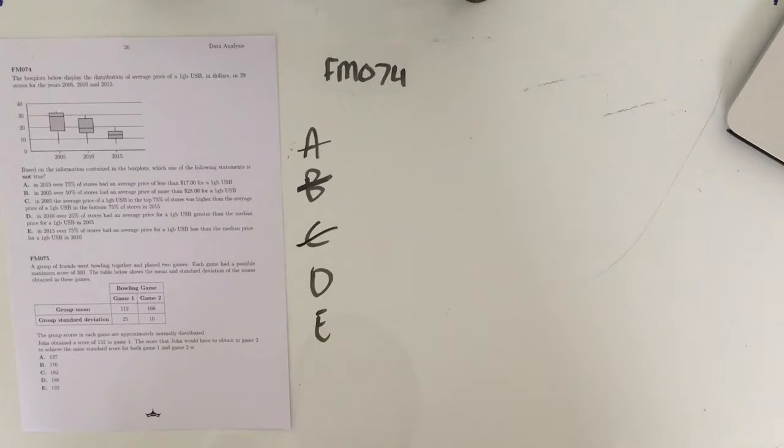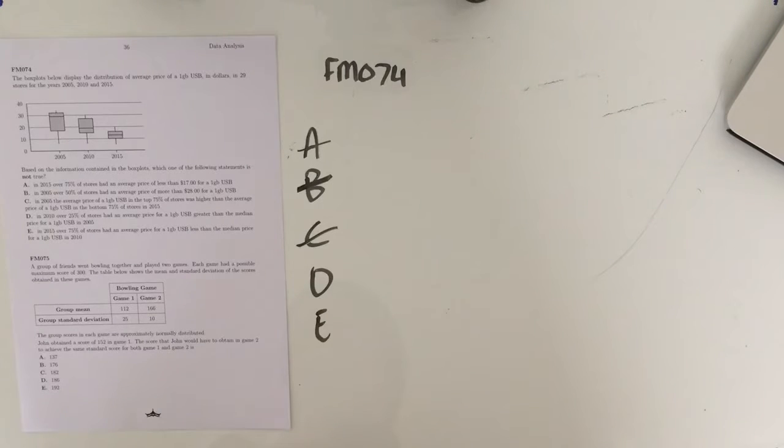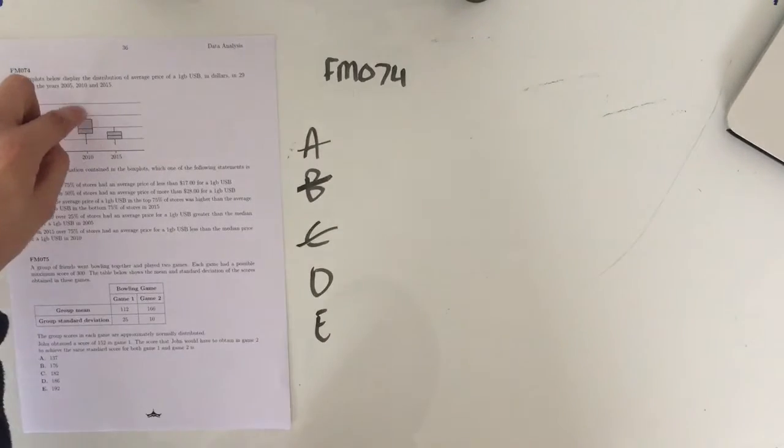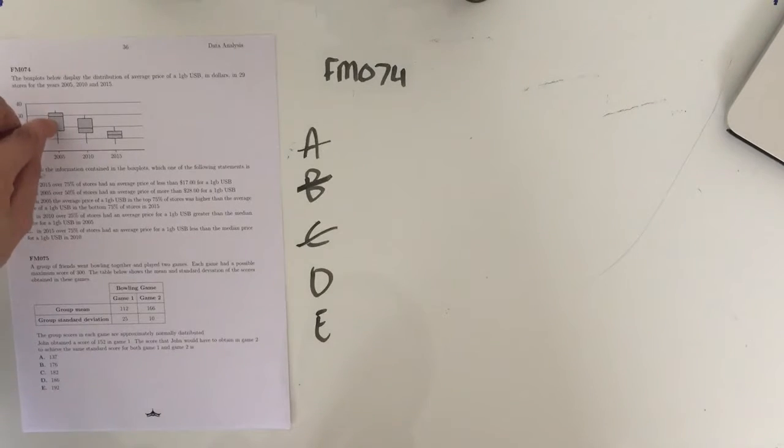It is not the one we're looking for. In 2010, over 25% of stores had an average price for a 1GB USB greater than the median price for a 1GB USB in 2005. So over 75% of them had an average price for 1GB USB less than. So we're probably looking at the bottom part there. Greater than the median price. And that's not true because our top 25% doesn't actually get greater than the median price for 2005. Our median price is here closer towards $30, whereas our last 25% looks like it's starting somewhere around $26, maybe $27.